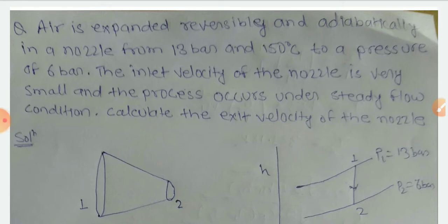Air is expanded reversibly and adiabatically in a nozzle from 13 bar and 150 degrees Celsius to a pressure of 6 bar. The inlet velocity of the nozzle is very small and the process occurs under steady flow condition. So calculate the exit velocity of the nozzle.